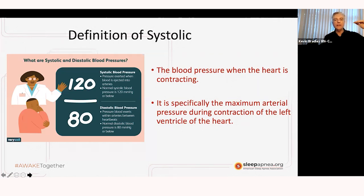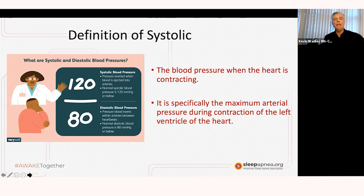Systolic is the top number. Generally speaking, a good pressure for most of the general population would be around 120 being the systolic number over 80, which is the diastolic number — and we'll talk about that.